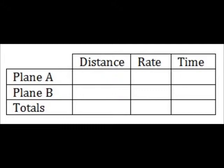Here is a sample table. You will need four columns and a row for each object plus a totals row. You may not always use the totals row, though.